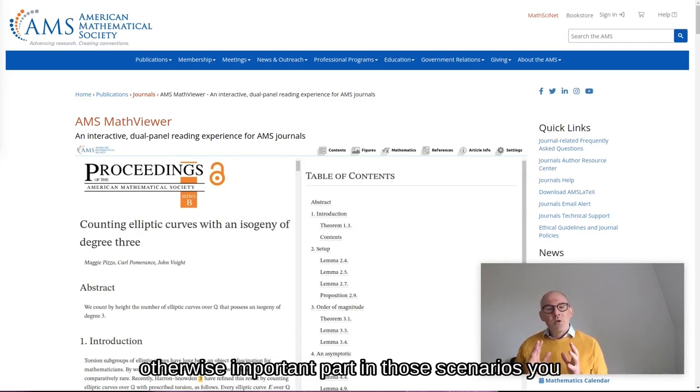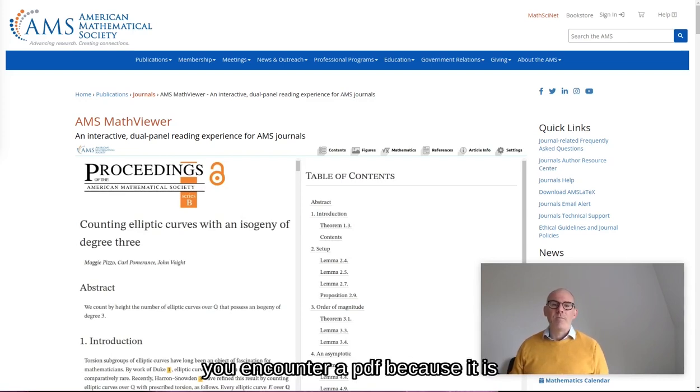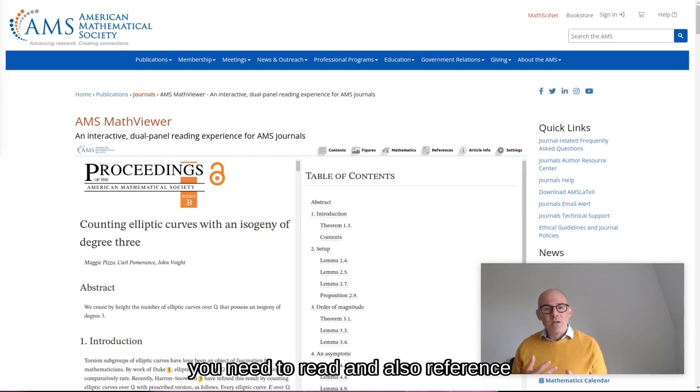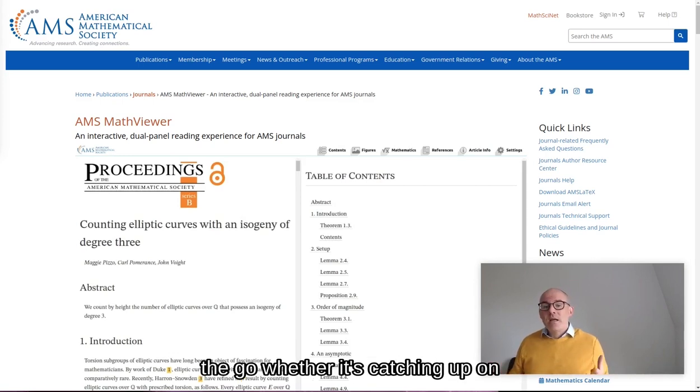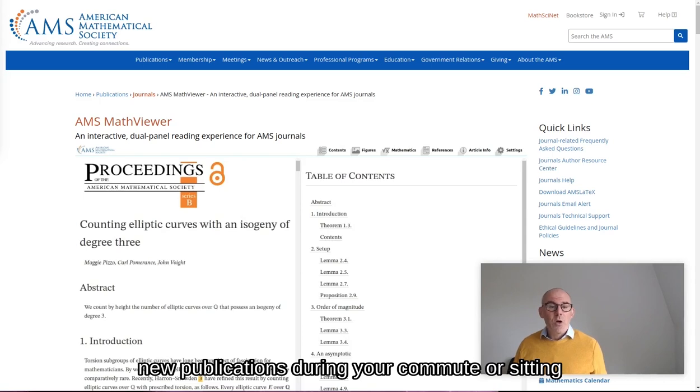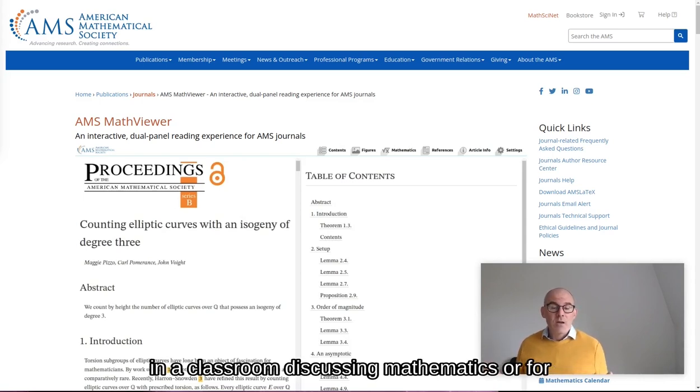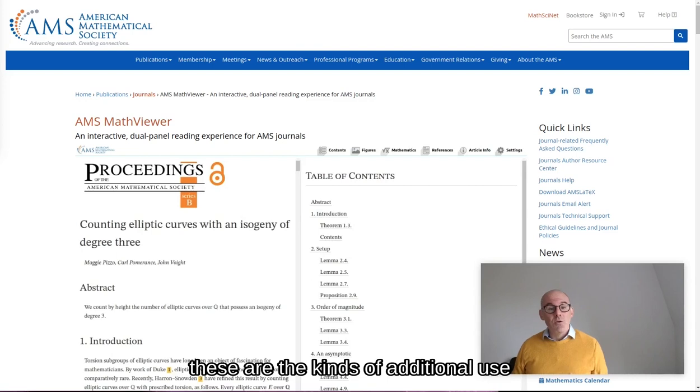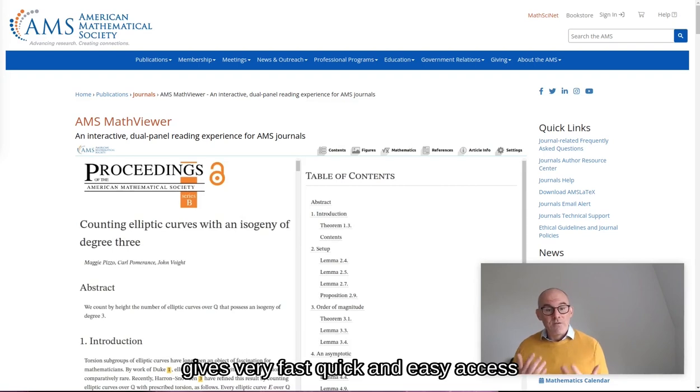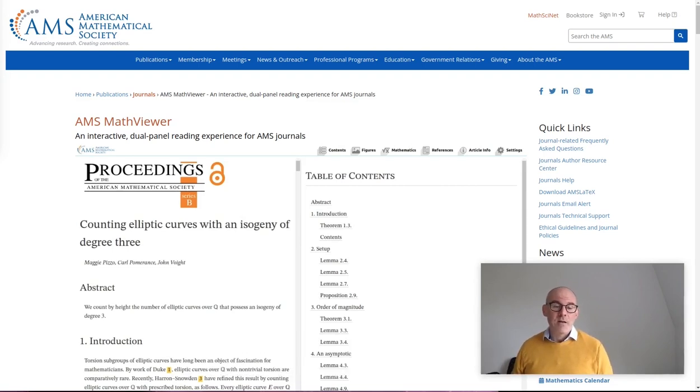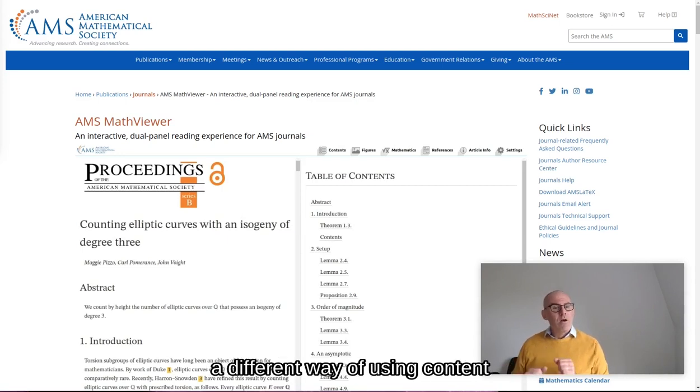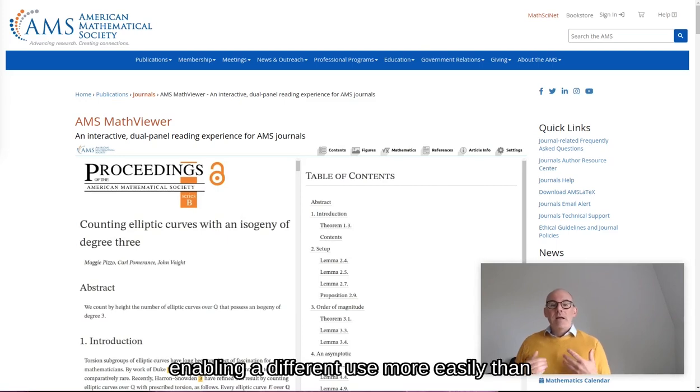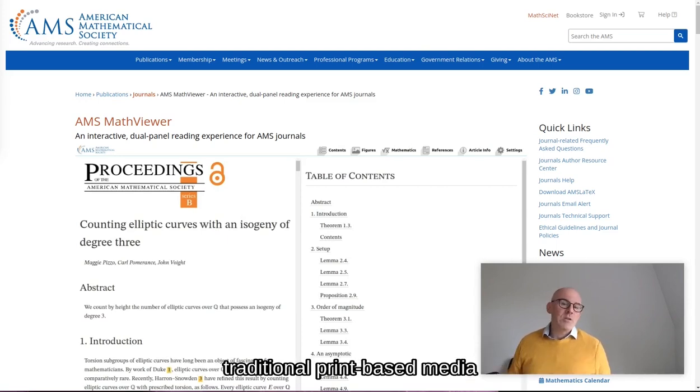In those scenarios, you often fall short when you encounter a PDF. Because it is difficult to find the correct place that you need to read and also reference again and again, especially if you are on the go, whether it's catching up on new publications during your commute, or sitting in a classroom discussing mathematics, or for that matter, in a coffee shop needing to look something up quickly. These are the kinds of additional use cases where we see the medium of the web shine, because it gives very fast, quick and easy access. And at the same time, it provides a different way of using content, enabling a different use more easily than traditional print-based media.